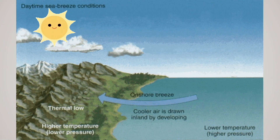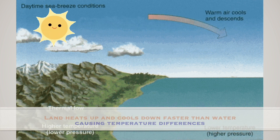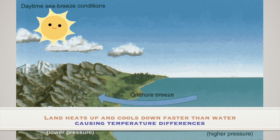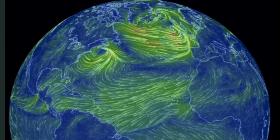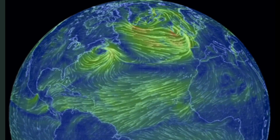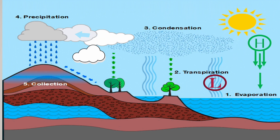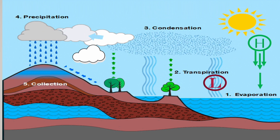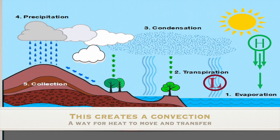Land and water have varying heat absorption capacity. In general, land tends to heat up and cool down faster than water, causing temperature differences. In turn, these temperature differences cause air and temperature movement across the planet. Hot air rises to the atmosphere while cooler air descends, creating convection and pressure differentials.